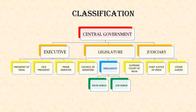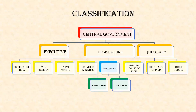The central government consists of three organs, namely the union executive, the union legislature, and the union judiciary. The union executive consists of the president, the vice president, the prime minister, the council of ministers, and the attorney general. In the union legislature, we have the two houses of the parliament — the Rajya Sabha and the Lok Sabha. Next is the union judiciary, which consists of the Supreme Court of India, the chief justice of India, and the other judges.